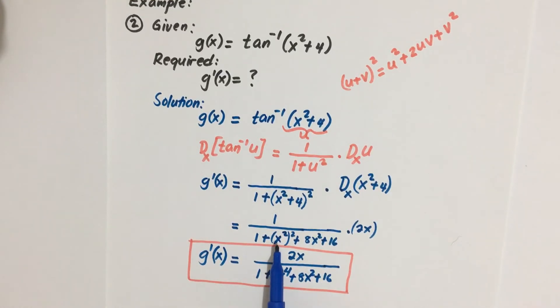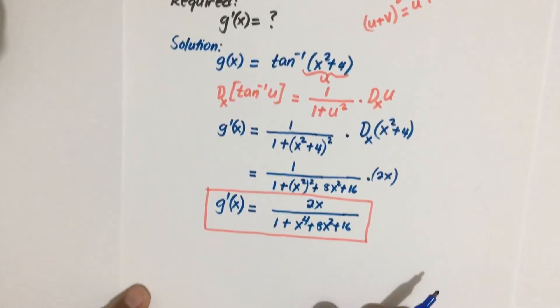How about this one, x to the fourth, twice the product, 8x squared plus 16. Okay, so I think this is all right.